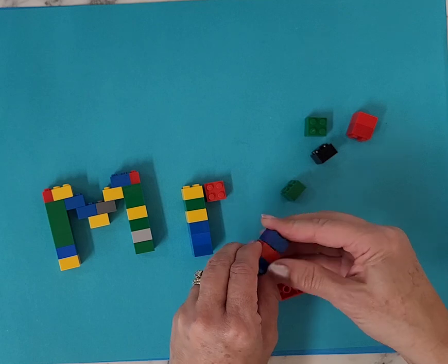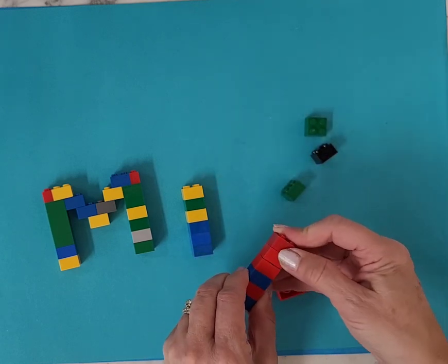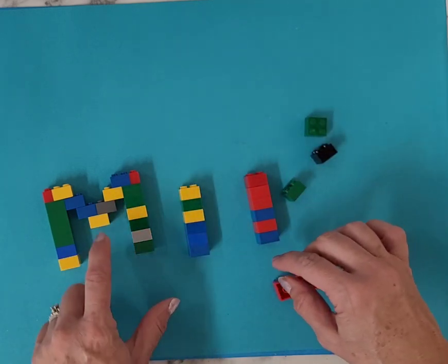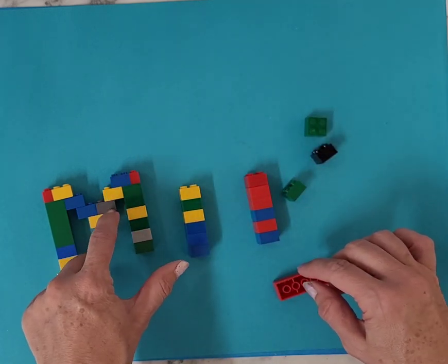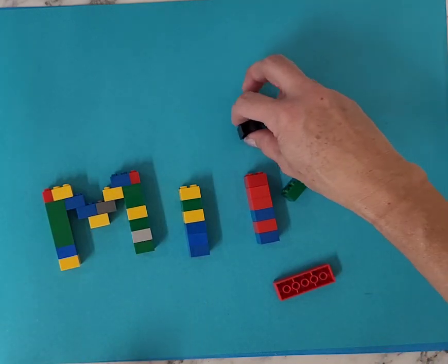Counting one through six. Okay, so I've got my two side pieces, and then I used seven more of those little squares.